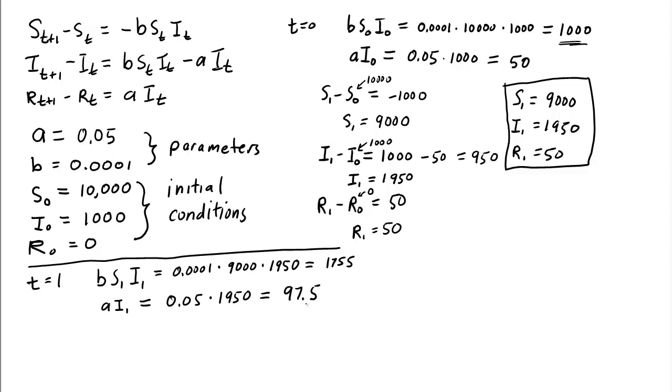Again, we're not going to worry about these fractional people. We'll just round in the end, but don't round while you're doing the calculations. So we'll assume that around 98 or so people were recovered.